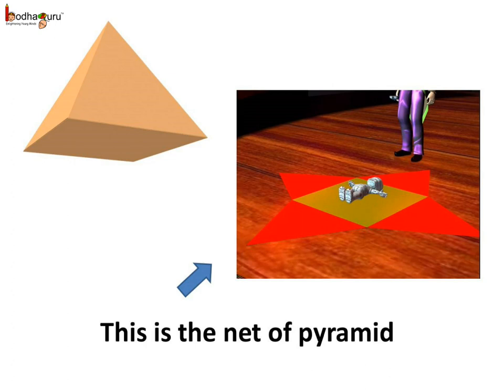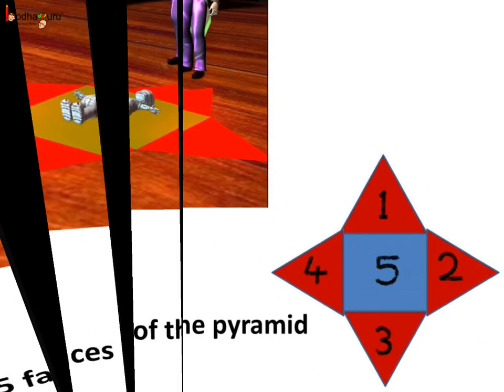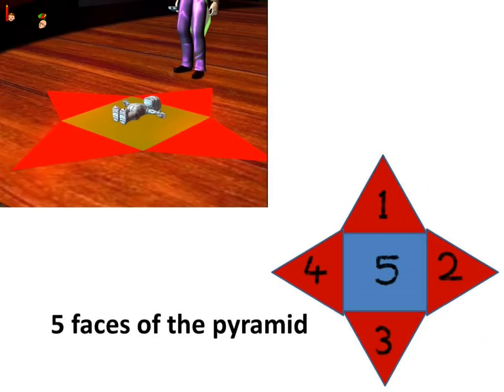So, let us try to unfold it in various ways. Here is the net as we saw in the story. We have numbered the faces so that we can recognize the different faces easily.